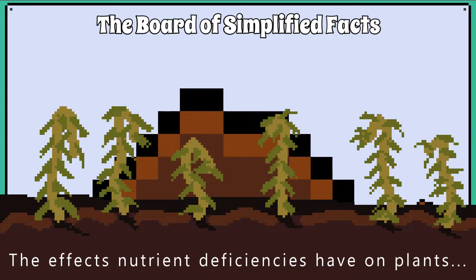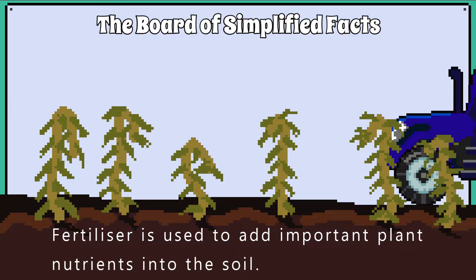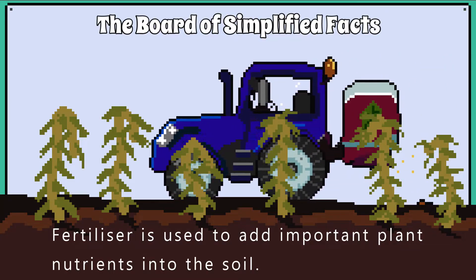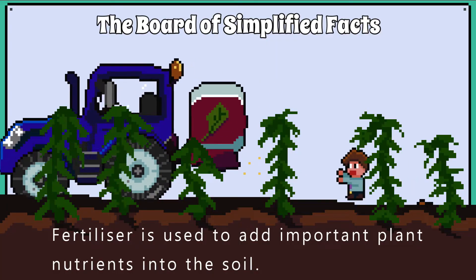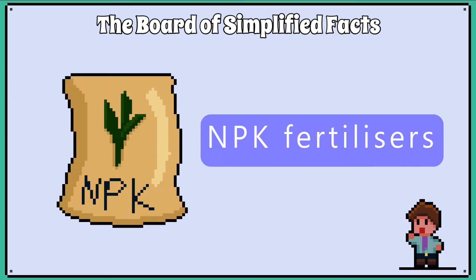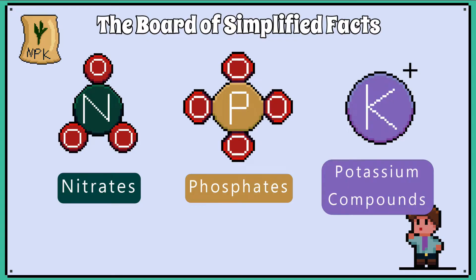Farmers who grow crops will be very aware that without healthy soil their crops will suffer. Farmers use fertiliser to add important minerals to the soil because plants need these minerals to build the complex molecules they need to survive. NPK fertilisers are used by farmers and gardeners because they contain nitrates, phosphates and potassium compounds — hence the name NPK.